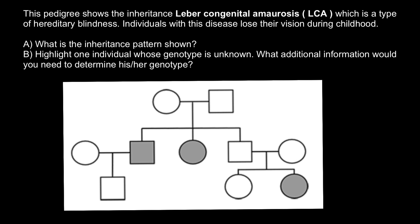Could it be a dominant genetic disorder? No, because we see that this couple is phenotypically normal, but they have two affected children. So this is not a dominant genetic disorder.